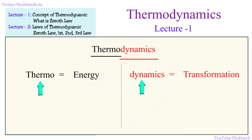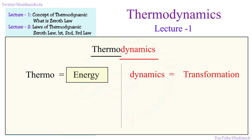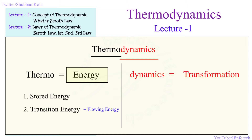Thermodynamics is divided into two parts: thermo and dynamics. Thermo means energy, and energy is of many types. It can be stored form of energy or it can be a transition form of energy. Transition form means flowing energy, and stored form includes potential energy, kinetic energy, internal energy, while transition form includes heat and work.